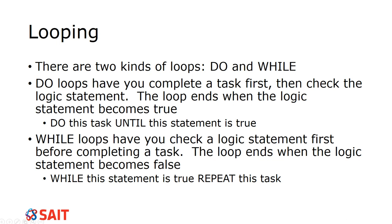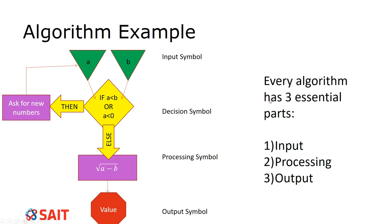Here's an example showing input, a decision, processing symbols (rectangles), and a value. Every algorithm has three essential parts: input, processing, and output. A simple analogy: when eating breakfast I input the food by putting it in my mouth, then I process it by chewing, swallowing, and letting my stomach and intestines do their work — the processing component has several parts, all linked in sequence.